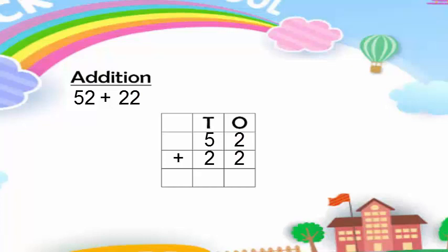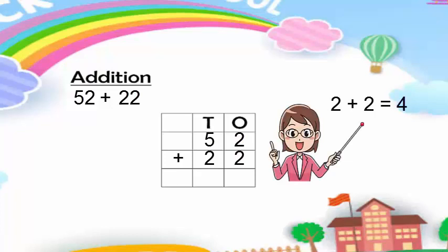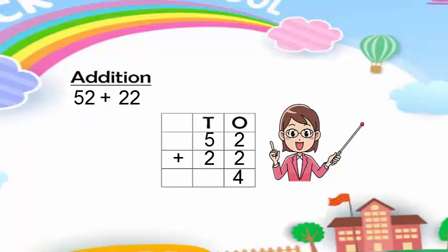Now we will add these two numbers all together. I have a small poem for you, so let's sing with me: two in my mind and two on my fingers — two, three, and four. We have four ones, so we write it in the ones column. Now for the tens: five in my mind and two on my fingers — five, six, and seven. We have seven tens, and we write this seven in the tens column. So our answer is seventy-four.